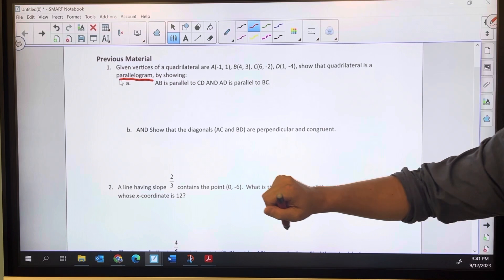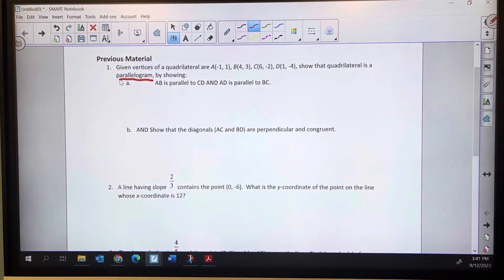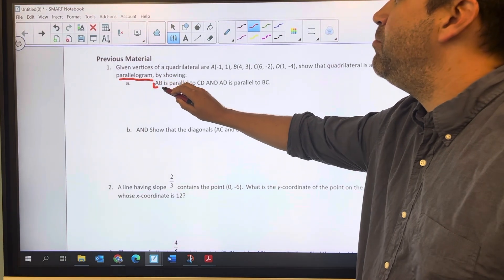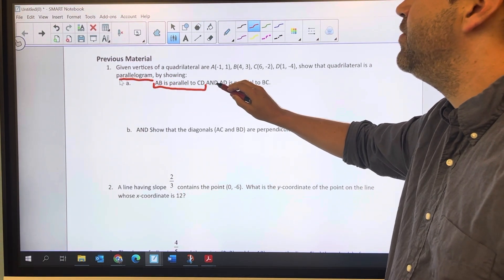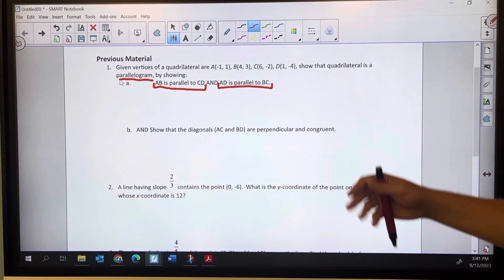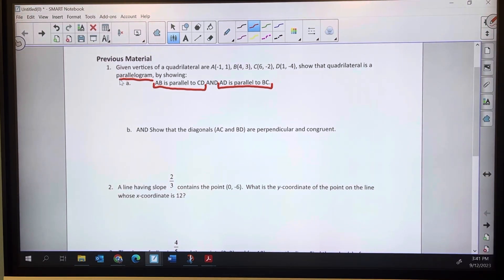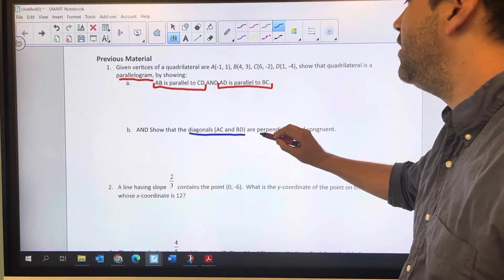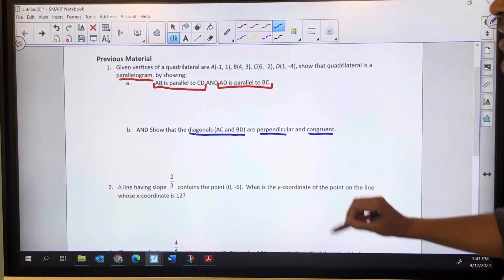Now parallelograms are something that we're going to learn about in another unit but what we need to know is AB parallel to CD and AD parallel to BC. So the two opposite sides need to be parallel and we're going to show the diagonals AC and BD are perpendicular and congruent.